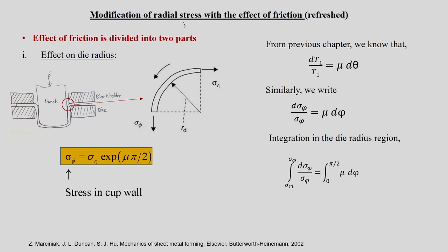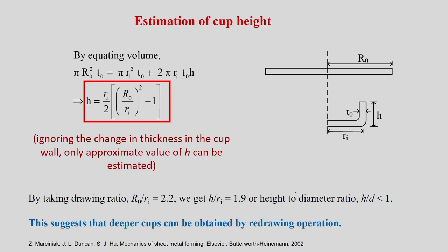Before we go ahead, there was a small confusion in the last class — the nomenclature was not written properly with respect to the effect of die radius when calculating sigma_r. There are two parts: effect of die radius, and friction between blank holder, die, and the sheet. Integrating in the die corner region gives sigma_phi = sigma_r · exp(μ · π/2).